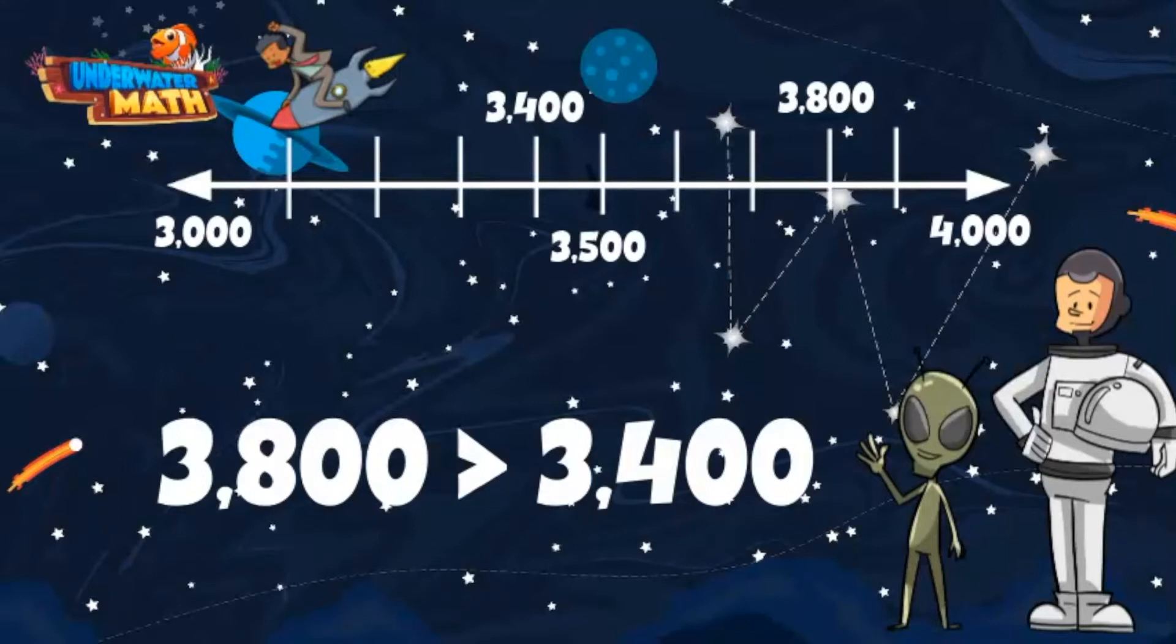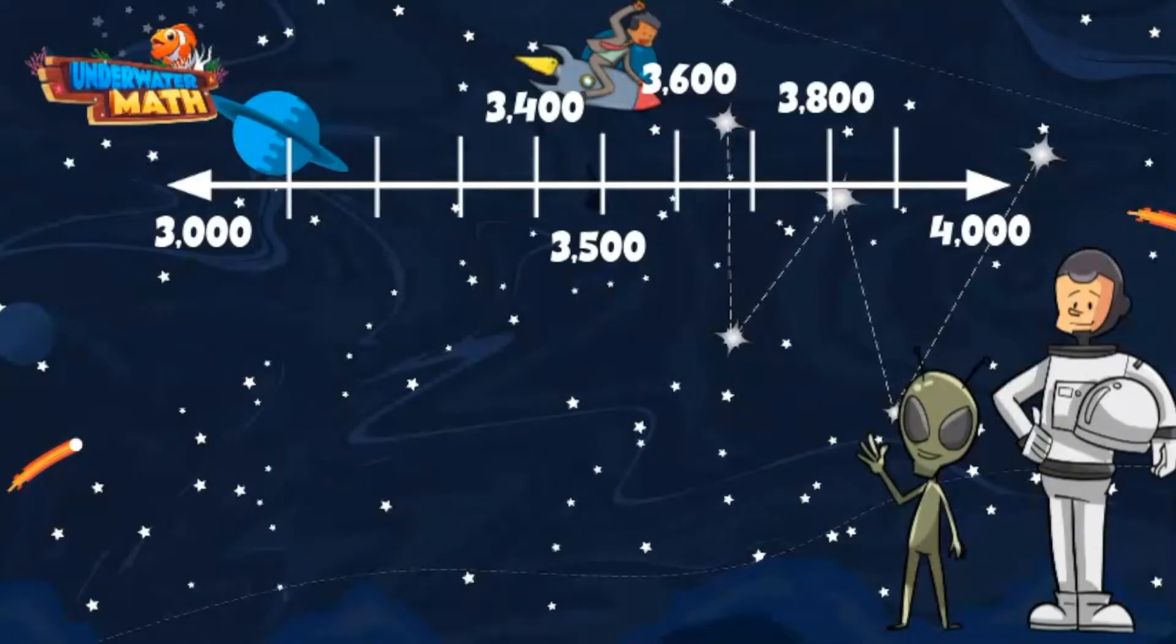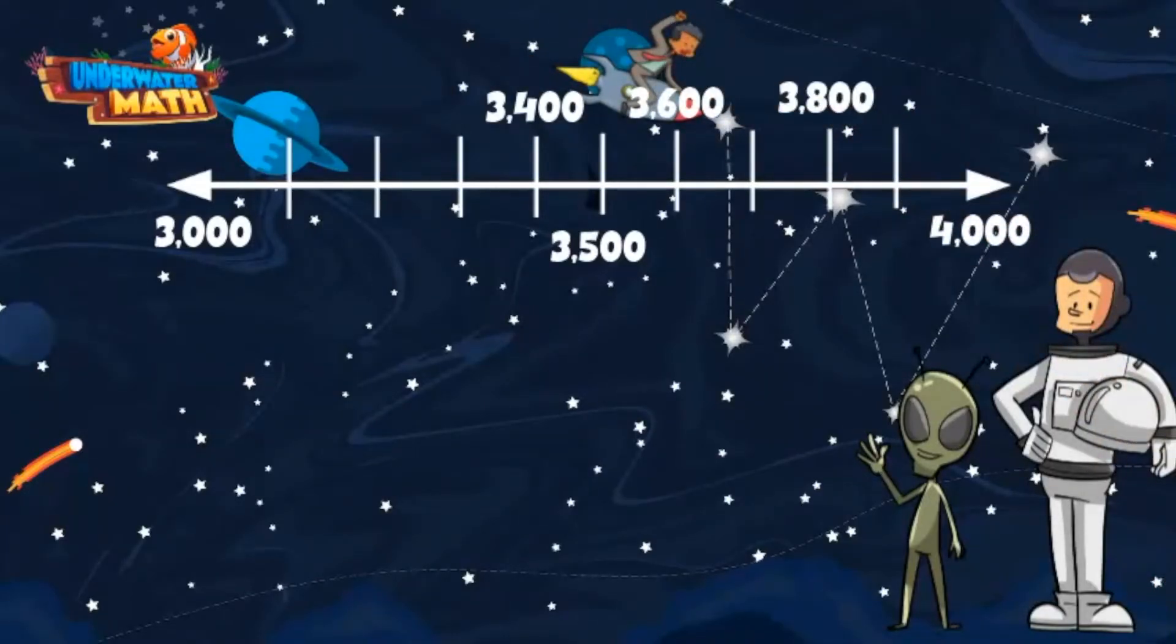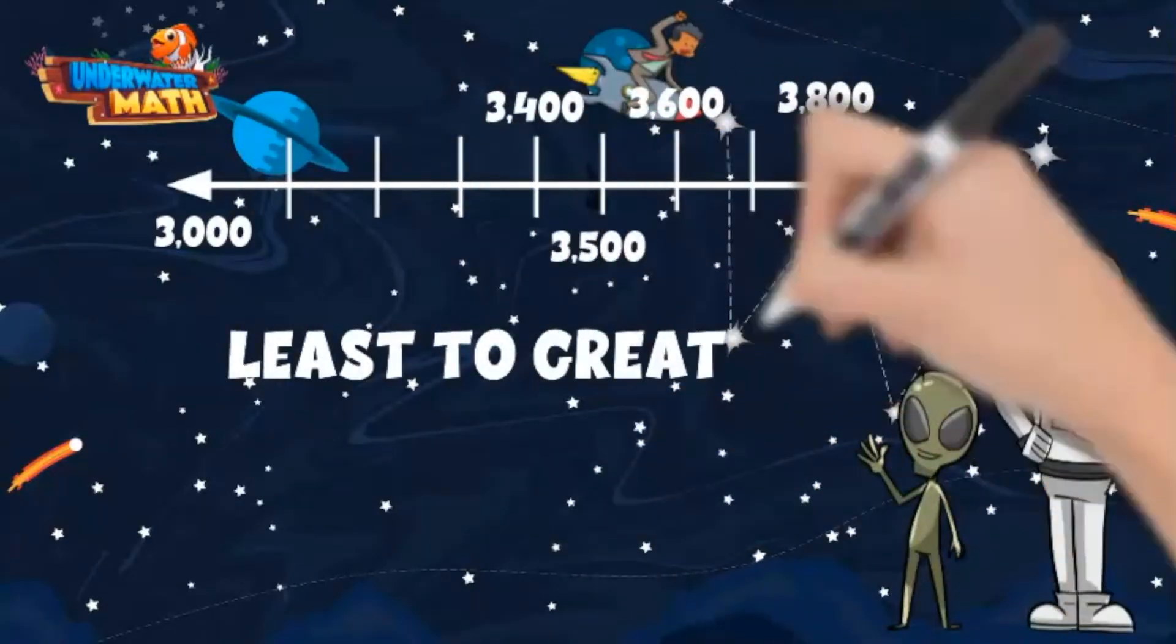Let's add in another number so we can work on ordering numbers. Marcus is going to add in the number 3600 which goes here on our number line. If we order our numbers from least to greatest, that means smallest to largest value.